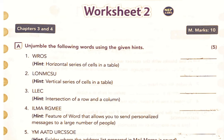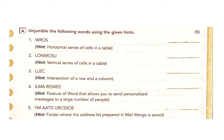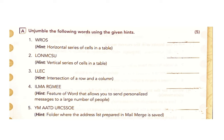Worksheet 2. A: Unscramble the following words using the given hints. 1) WROS — Hint: Horizontal series of cells in a table. Answer: Rows. 2) LONMCSU — Hint: Vertical series of cells in a table. Answer: Columns. 3) LLEC — Hint: Intersection of a row and a column. Answer: Cell.